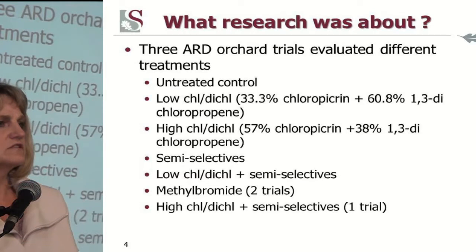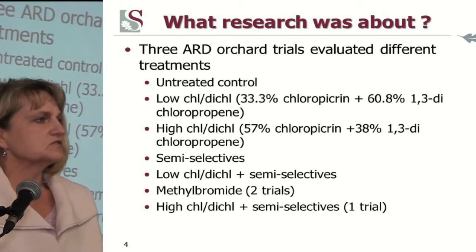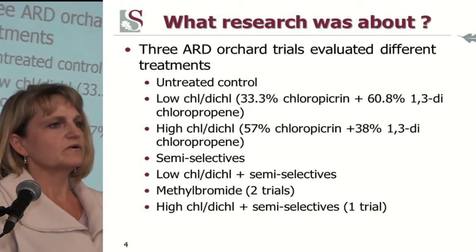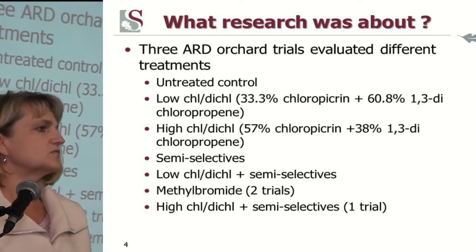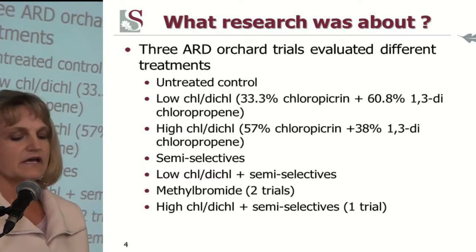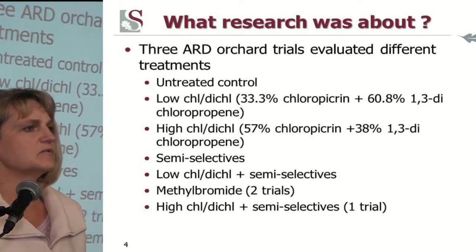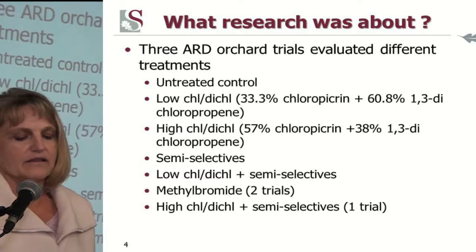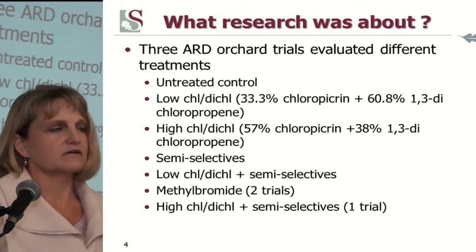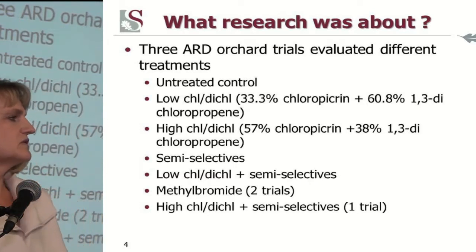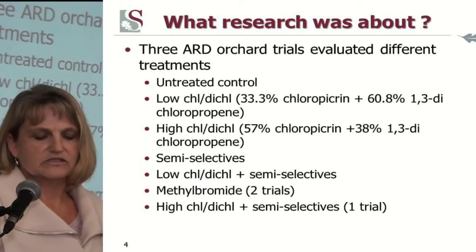We conducted three orchard trials that evaluated these different treatments. Two ratios of the dichloropicrin were used: the low one being 33%, which is the standard that most growers currently use, and then a higher one of 57%. Then semi-selective chemicals on their own, and also the semi-selective combined with the fumigation. For two trials, we still had methyl bromide, which was the standard in previous years.